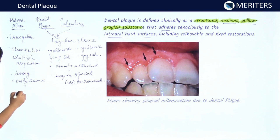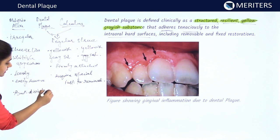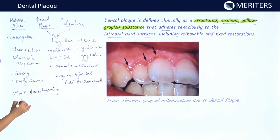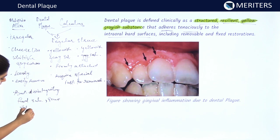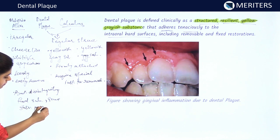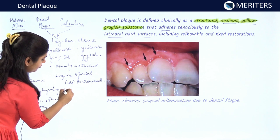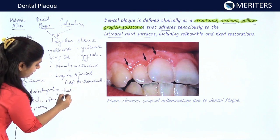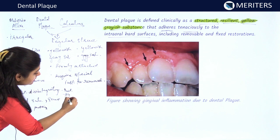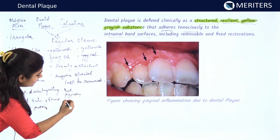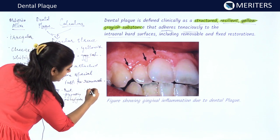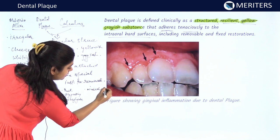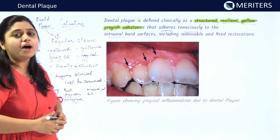Materia alba consists of bacteria, disintegrating food substances, and some salivary proteins. While dental plaque consists of bacteria, glycoproteins, and proteoglycans, and mineralized substances like calcium and phosphate are present.